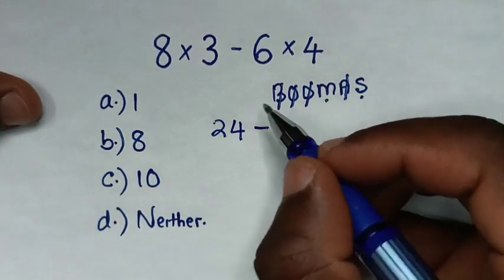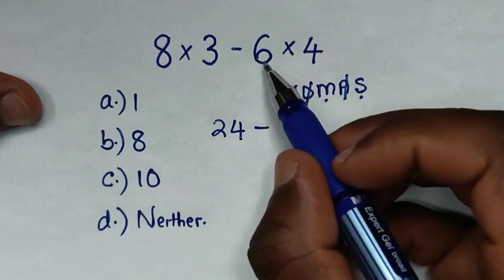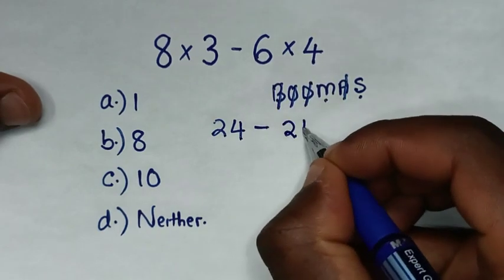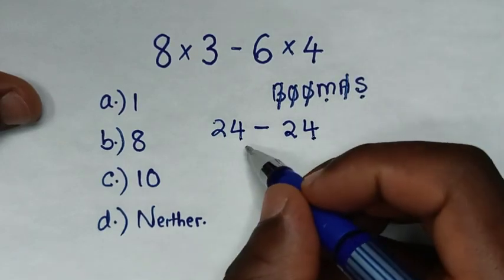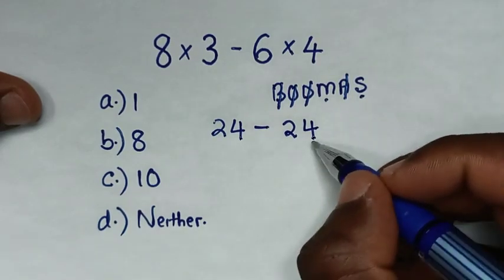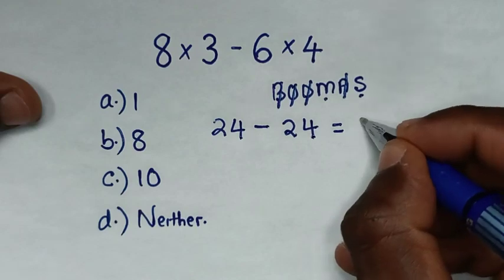Then minus the second multiplication of 6 times 4, it is 24. Now we are left with this subtraction of 24 minus 24, which is equal to 0.